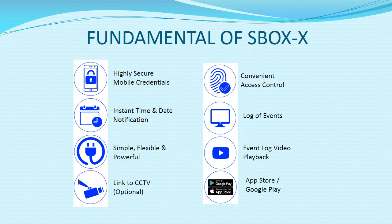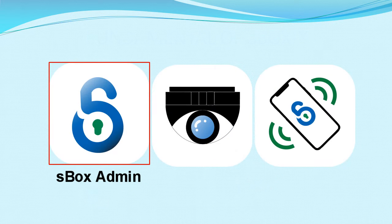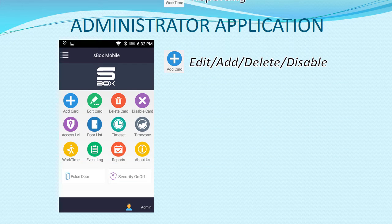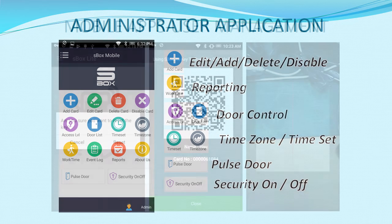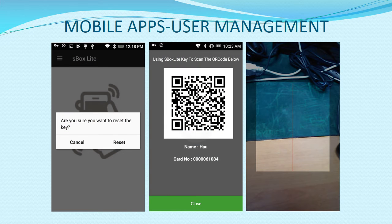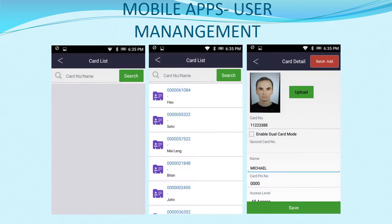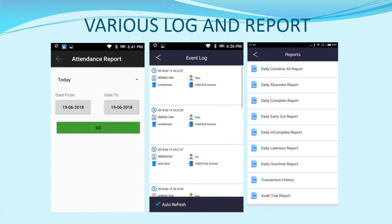S-Box X has various features for users. All three applications need to be installed before using S-Box X. S-Box X Admin is for admin use, similar to Vault Pro or Fulco Web. Users need to scan the QR code from the admin card user list, with various logs and reports available.